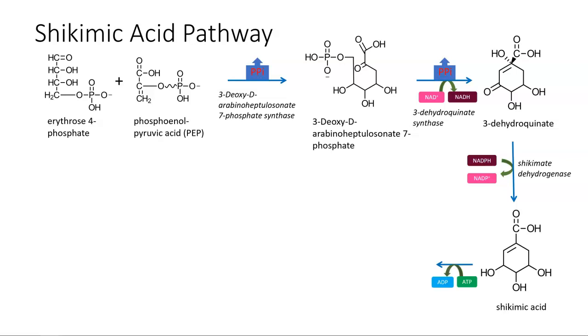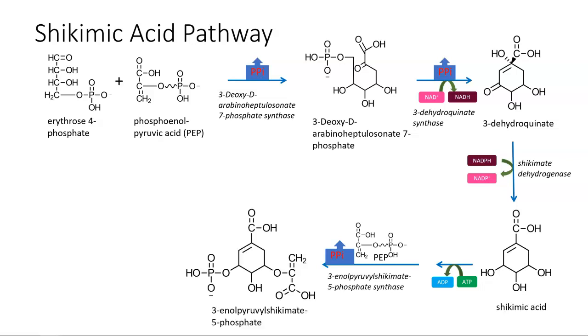The shikimic acid is then phosphorylated with ATP and reacts with another molecule of phosphoenolpyruvic acid in the presence of the enzyme 3-enolpyruvylshikimate-5-phosphate synthase to form 3-enolpyruvylshikimate-5-phosphate. Pyrophosphate is released.